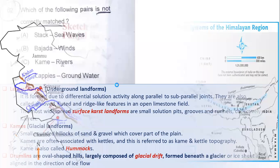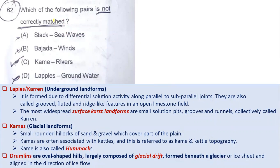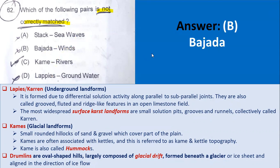Let's move to question number 62: which of the following pairs is not correctly matched? Bajada paired with wind is not correct — Bajada is not a wind landform. Looking at the options: Lapies or Karren are underground karst landforms formed due to differential solution activity along parallel sub-parallel joints, also called grooved, fluted, or rill-like features. The most widespread surface karst landforms are small solution pits collectively called Karren.